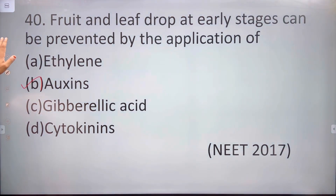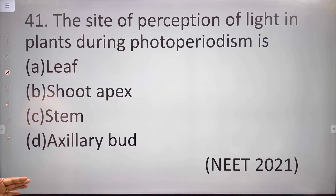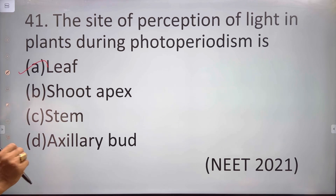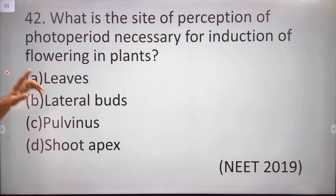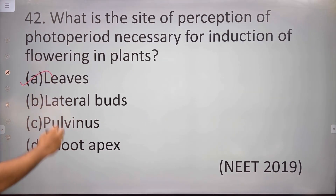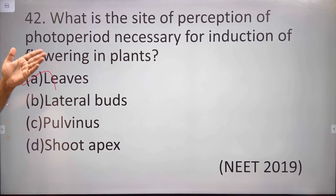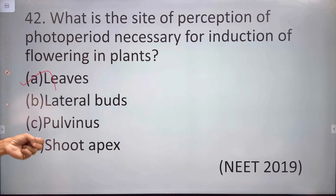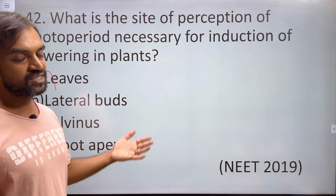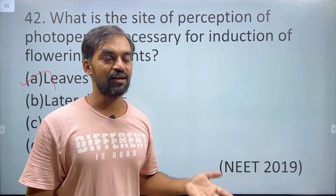For pineapple plants to produce flowers, the combination of hormones that can be applied to artificially induce flowering throughout the year is auxin and ethylene. The site of perception of light for photoperiodism is the leaf. In 2021 and 2019, the question asked: what is the site of perception of the photoperiod necessary for induction of flowering in plants? The answer is the leaf. These are all the questions from the last 5 years in Plant Physiology.